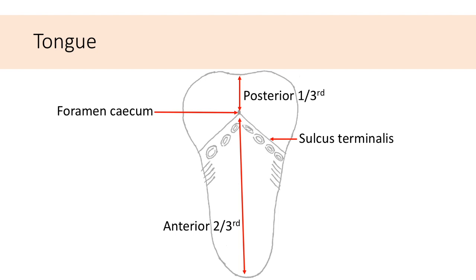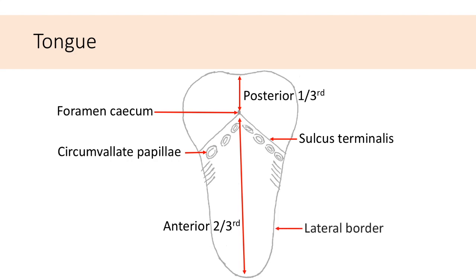Anterior to the sulcus terminalis, we find a row of circumvallate papillae. The two lateral borders are marked by the presence of foliate papillae close to the sulcus terminalis.